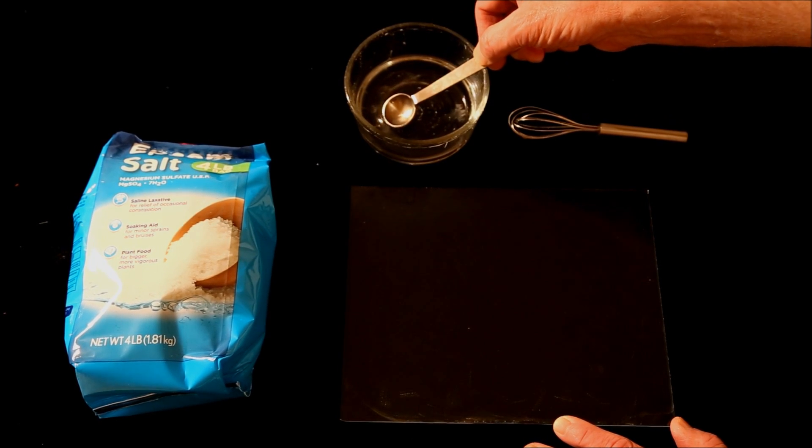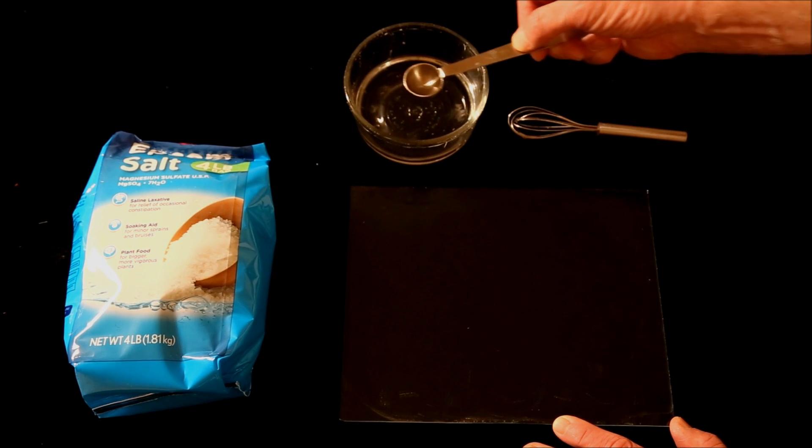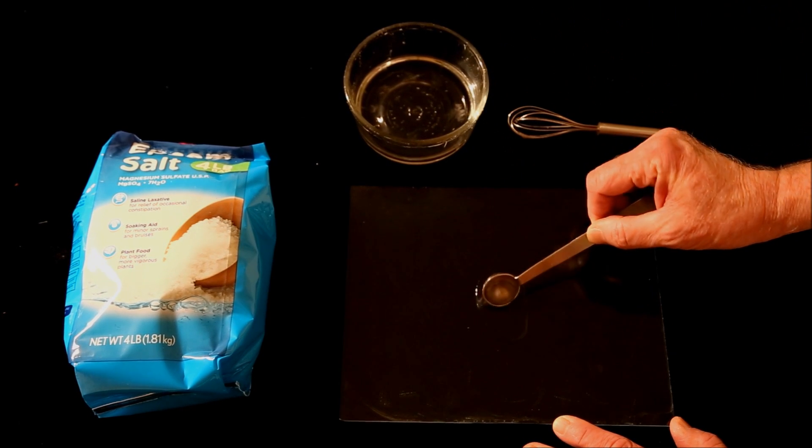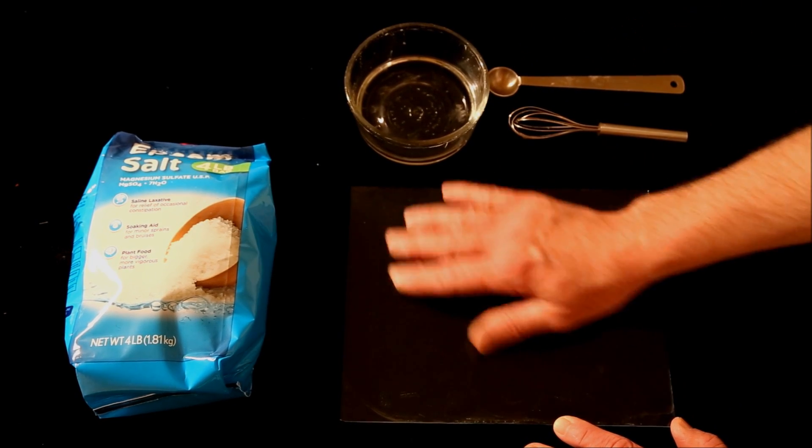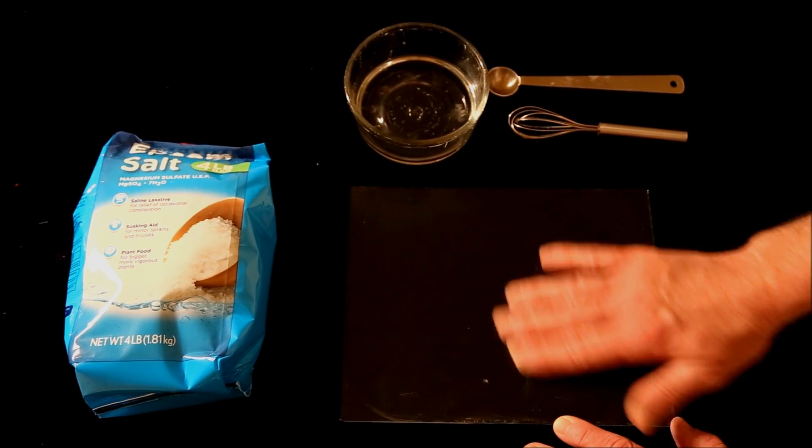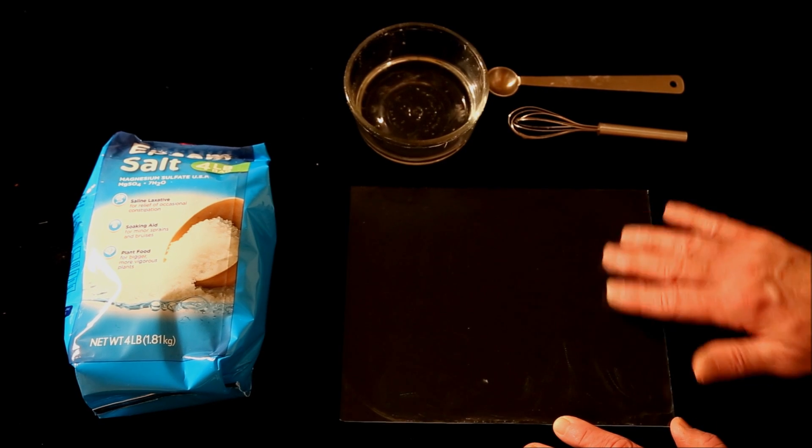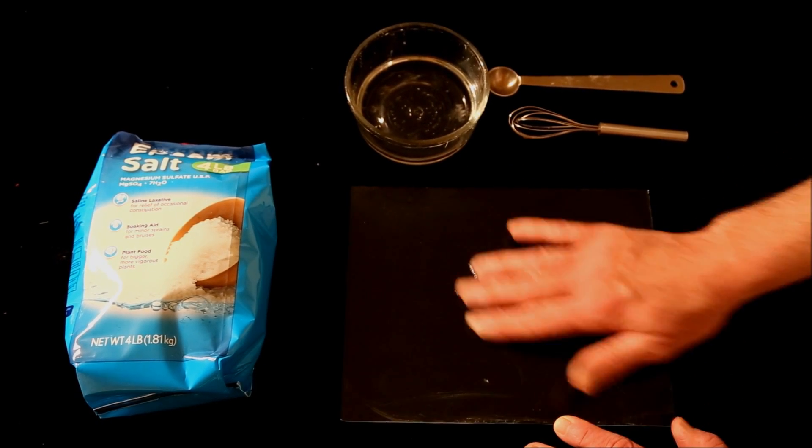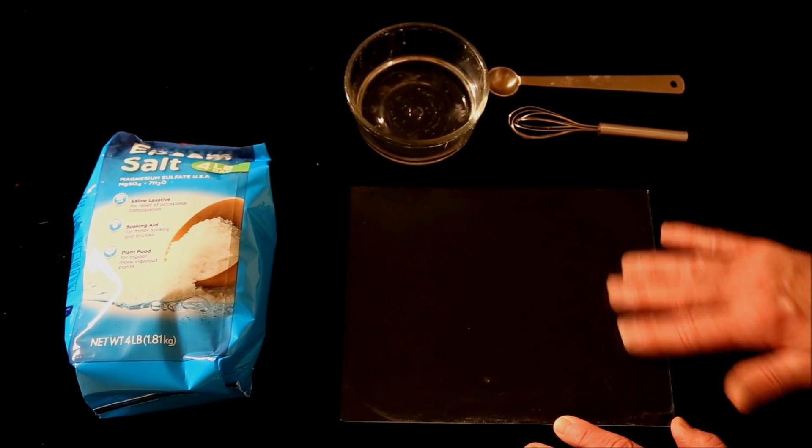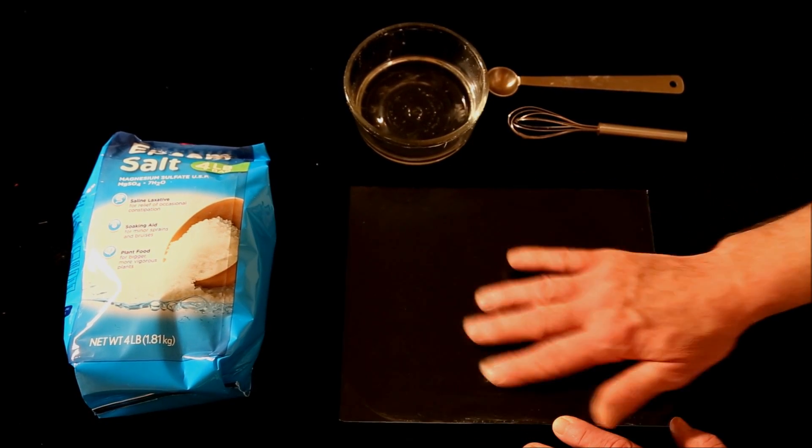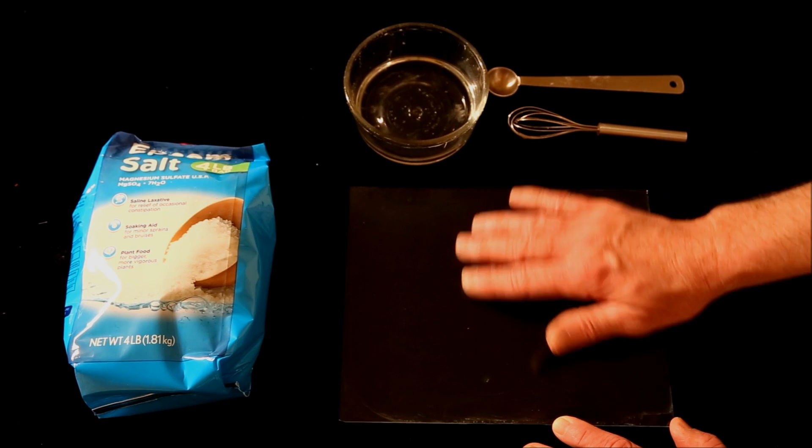Once the dish soap is spread around, take one teaspoon of the crystal solution, place it in the center, and very gently spread it over the entire surface. Without the soap, it would tend to bead up and form small areas where the solution is concentrated, instead of a thin uniform sheet.